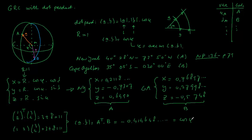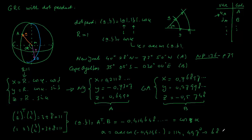All those digits matter because it's a big distance. This equals the cosine of the angle — I'll call it alpha — between the two vectors. So alpha is the arc cosine of minus 0.414648, which gives us about 114.497 degrees. Times 60 gives something like 6869.8 nautical miles. So this is a way to calculate the great circle distance between New York and Cape Agulhas with the use of a dot product. Thanks for watching.